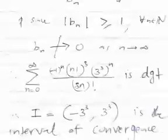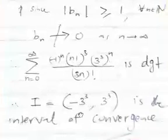Similarly, substituting x = -27 gives an alternating series with general term B_n. We can show |B_n| ≥ 1 for all n, so B_n also does not converge to zero. That means the series is also divergent at x = -27. Therefore the interval of convergence is given by (-27, 27).